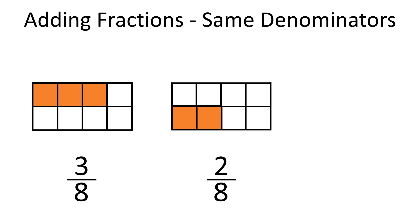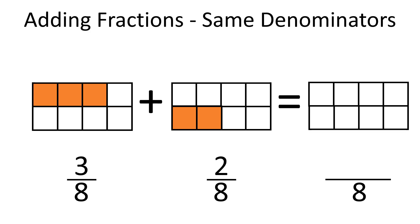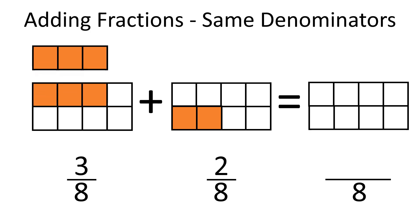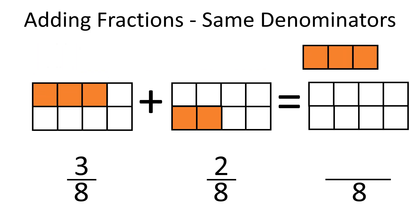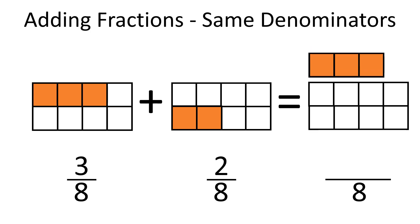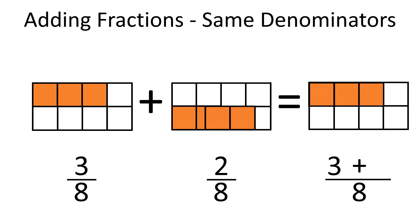Let's practice. How much is 3 over 8 plus 2 over 8? Both fractions have the same denominators, so we only need to add the numerators. In this example, 3 plus 2 is 5. It means 3 over 8 plus 2 over 8 is equal to 5 over 8.